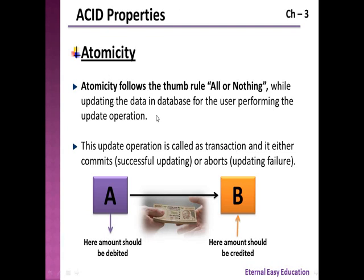Atomicity follows the thumb rule: all or nothing. While updating data in the database, this update operation is called a transaction, and it either commits — meaning successful updating — or aborts — meaning updating failure. For example, consider person A with an account transferring an amount to person B. The amount in account A should be debited and the amount in account B should be credited.